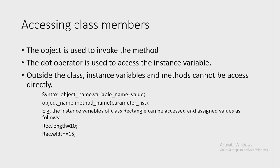To access members from outside the class, the object and the dot operator are used. The syntax is: objectName.variableName = value and objectName.methodName(parameterList). Here, objectName is the name of the object, variableName is the name of the instance variable, methodName is the name of the method, and parameterList is a comma-separated list of actual values that must match in types and number with the parameter list declared in the class.